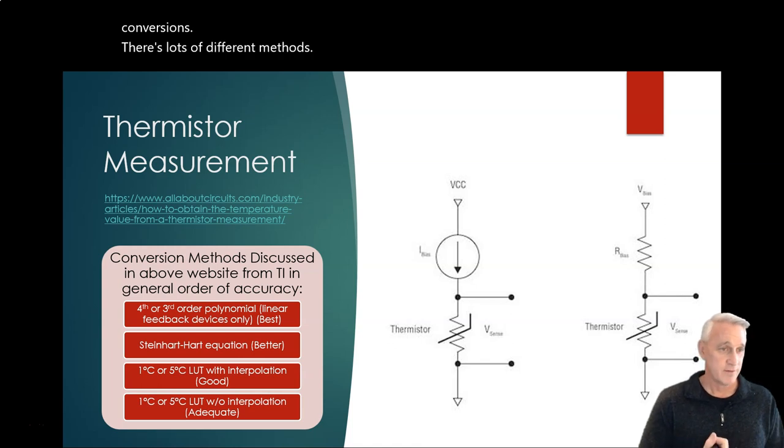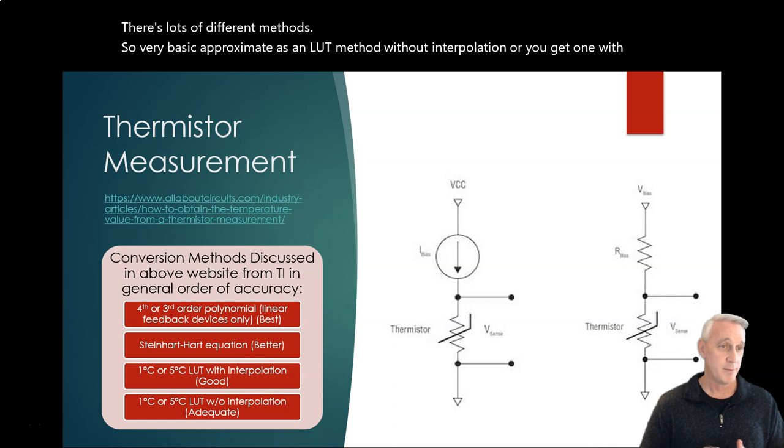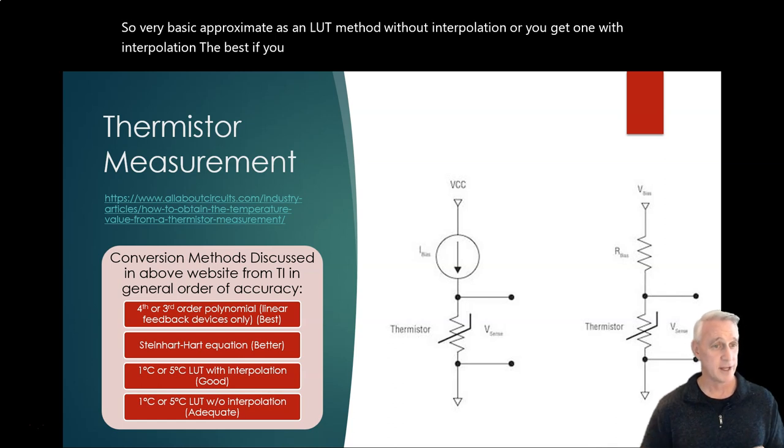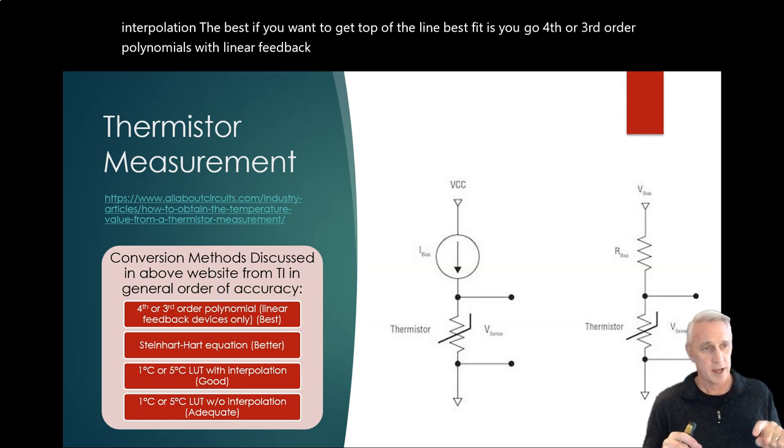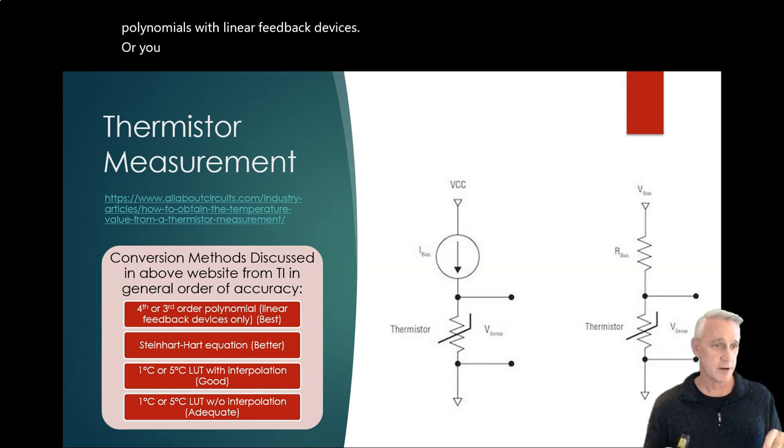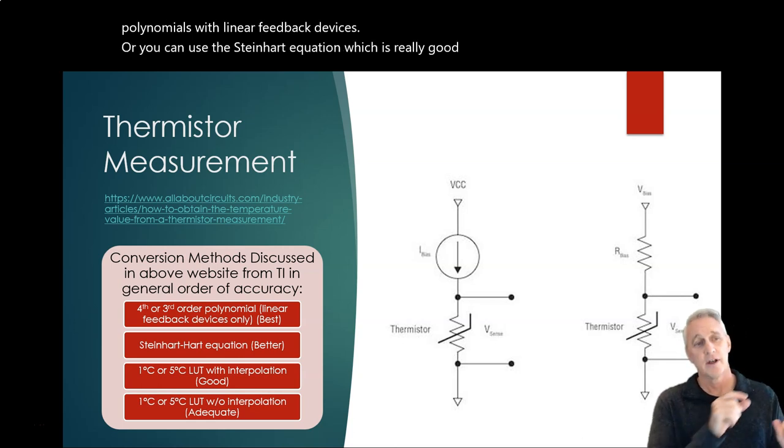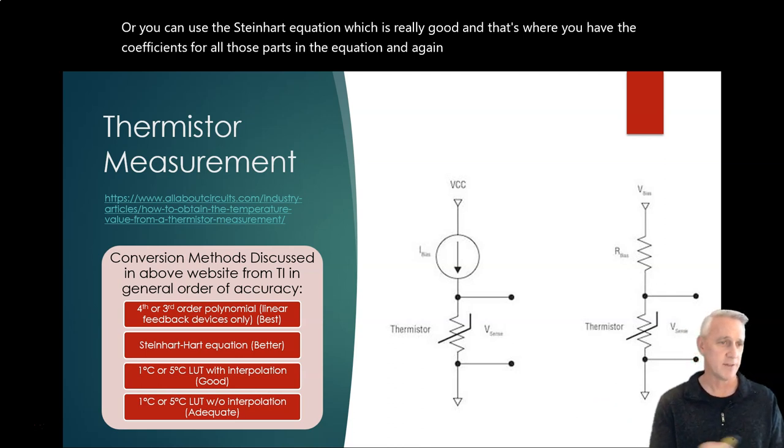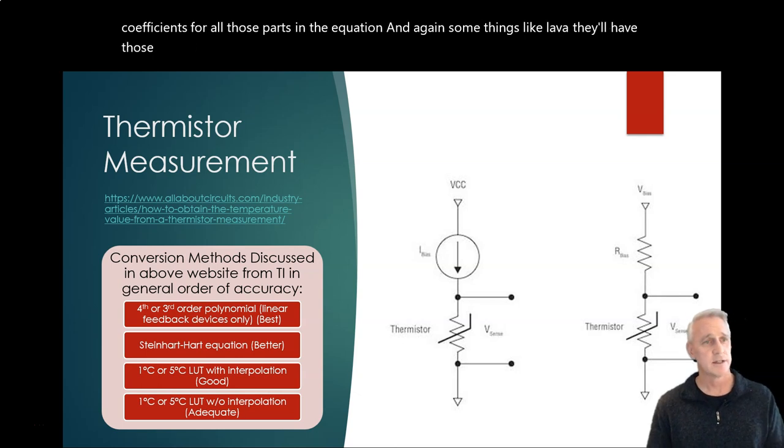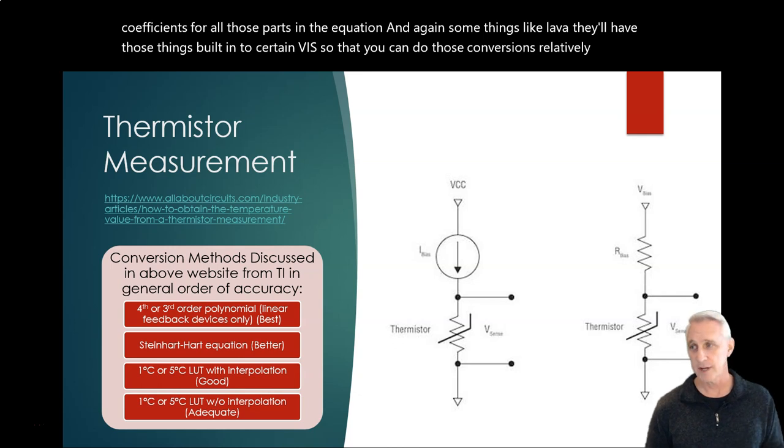Very basic approximate is an LUT method without interpolation, or you get one with interpolation. The best, if you want to get top of the line best fit, is you go fourth or third order polynomials with linear feedback devices. Or you can use the Steinhardt equation which is really good, and that's where you have the coefficients for all those parts in the equation. Like things like LabVIEW, they'll have those things built in to certain VIs so that you can do those conversions relatively easily and you don't have to reinvent the wheel with everything.